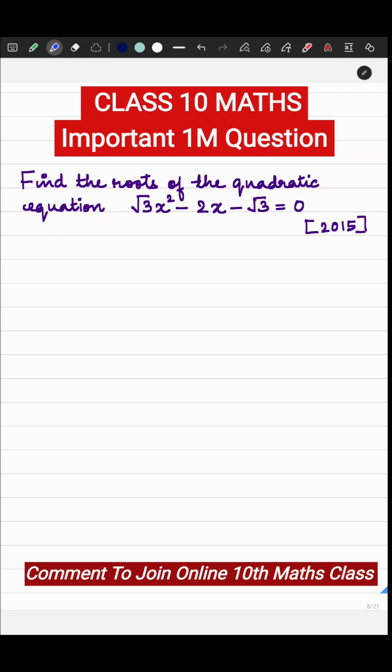In this question you have to find the roots of the quadratic equation which is given by ax square plus bx plus c equal to 0. So let us write the given quadratic equation first. Root 3 x square minus 2x minus root 3 equal to 0.